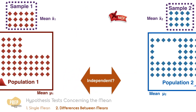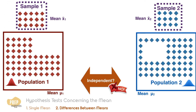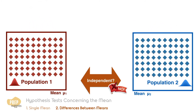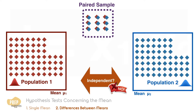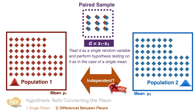In the case that the two populations are not independent, we have no choice but to use the paired comparisons test. Instead of considering the samples independently, the samples from population 1 have to be paired with the corresponding samples from population 2. This method essentially creates a random variable d, which is the difference between the observation in population 1 and the corresponding observation in population 2. We can then treat d as a single random variable and perform hypothesis testing on it as in the case of a single mean.